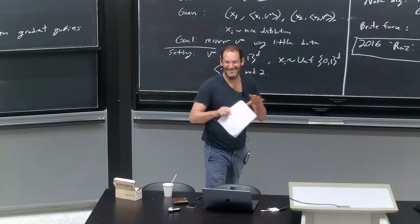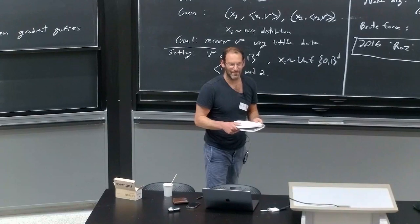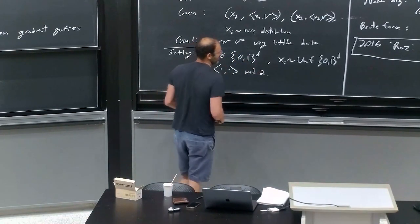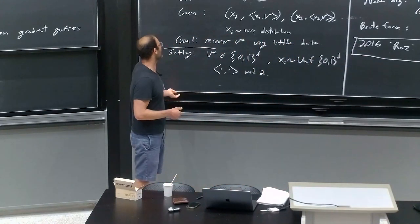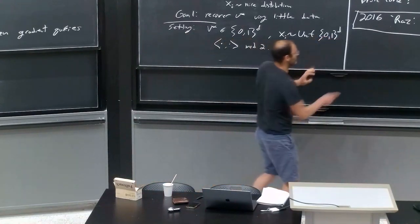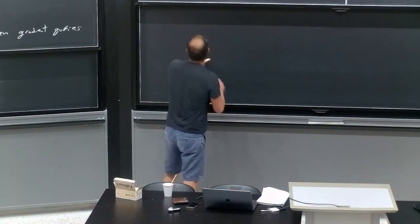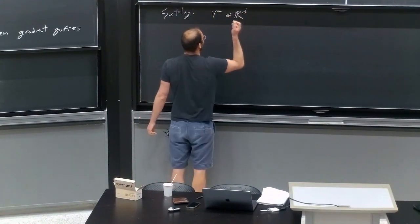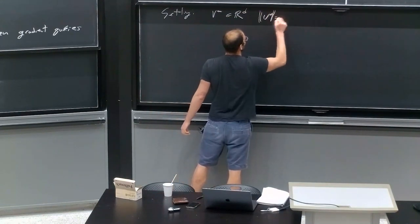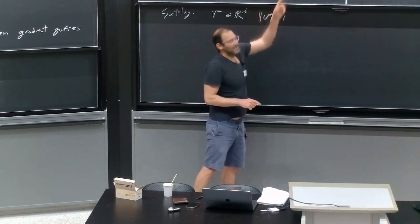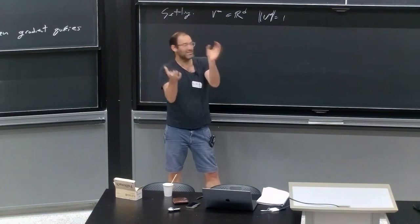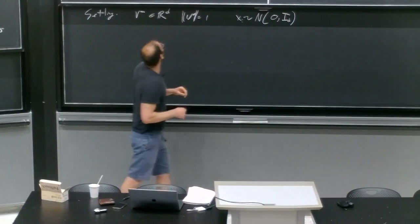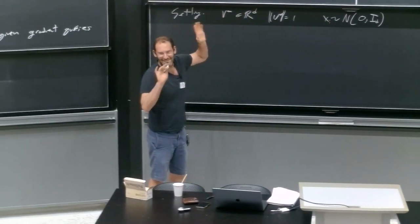I still think one can get cool results by trying to finish that piece. The other motivation behind the conjecture was wondering what happens in the real-valued case. So what happens over the reals? Say V-star is a unit vector in D dimensions, the xi's are picked from an isotropic Gaussian in D dimensions, and the inner product is over the reals — literally linear regression over the reals.